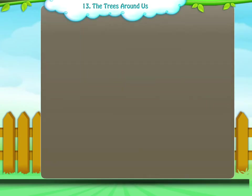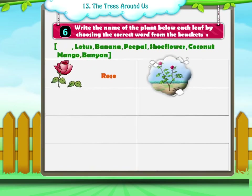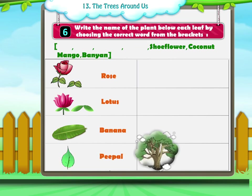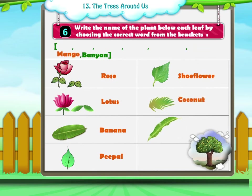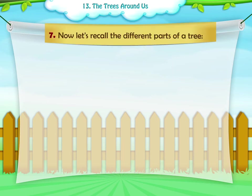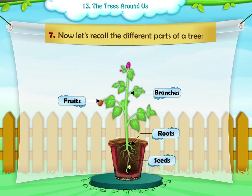Coconut wood. Exercise 6: Write the name of the plant below each leaf by choosing the correct word from the brackets: rose, lotus, banana, pepper, shoe flower, coconut, mango, banyan. Exercise 7: Recall the different parts of a tree: roots, branches, fruits, seeds, leaves, trunk, flowers.